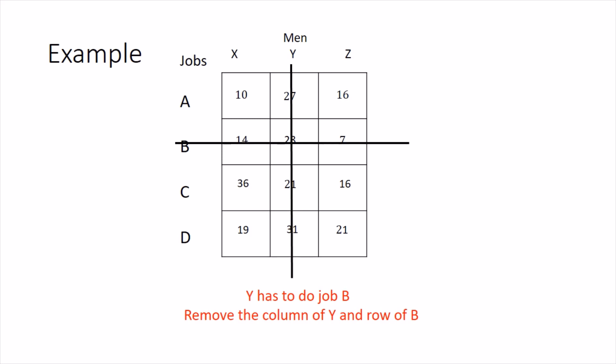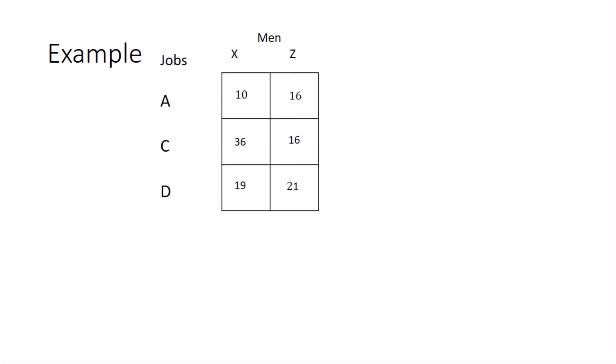To deal with this situation, we remove the column of Y and the row of B from the matrix. Our ultimate aim is to determine which job goes to which person, and since the decision for job B has already been taken — job B is assigned to person Y — there is no point keeping Y and B in the matrix. So we remove them and optimize the rest. After removing them we get an updated matrix, which we then balance by inserting a third column.